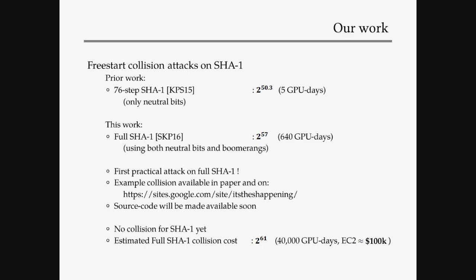This is the first practical attack on full SHA-1. We have an example collision on our website, the SHAppening, and we will also make the source code available for others to run. This is not a full SHA-1 collision yet, but based on this work, we can present new updated estimated costs for finding a full SHA-1 collision. Using GPUs, we estimate it would take about 40,000 GPU days, and if you rent this on EC2, it would cost about $100,000 — significantly lower than Schneier's estimates before.